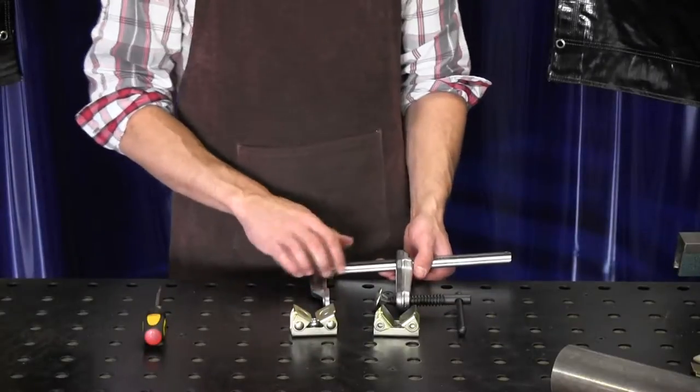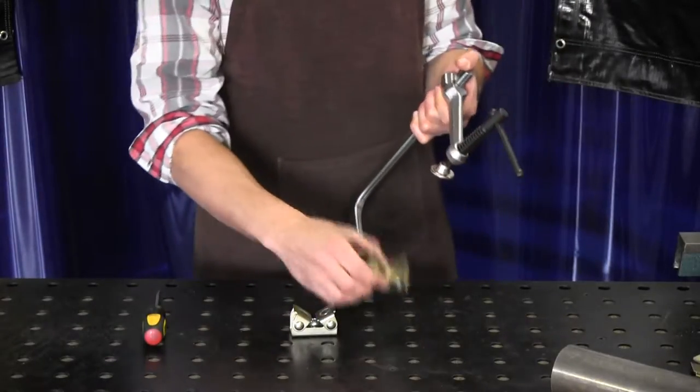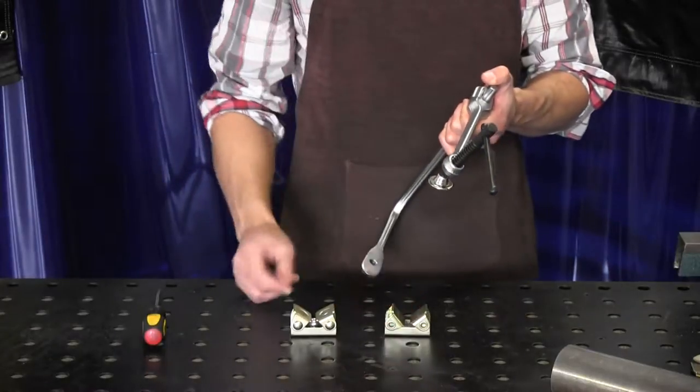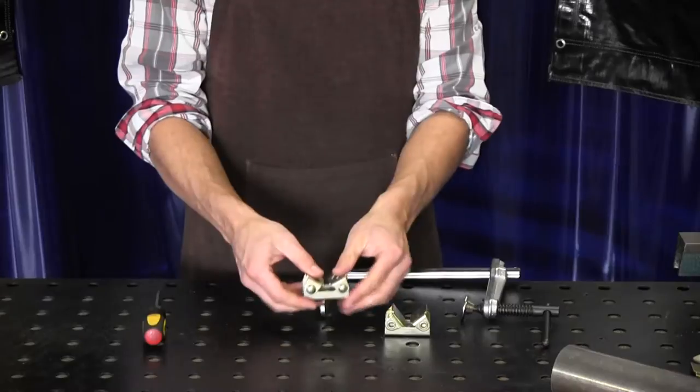I'll attach the v-pad accessory to the clamp jaw through the tapped hole to create a pipe clamp. I want to use my 4-in-1 clamp in a butt welding application, so I'm going to use the optional magnetic v-pad.